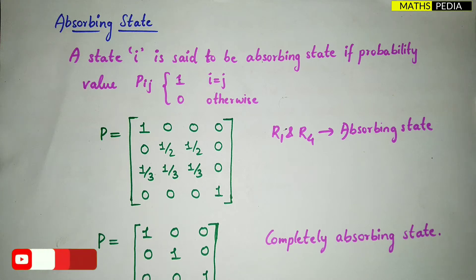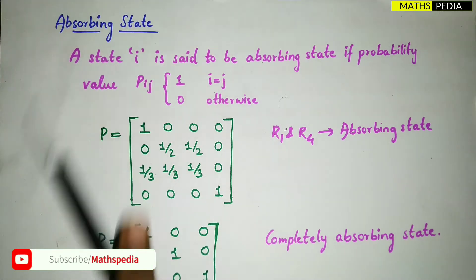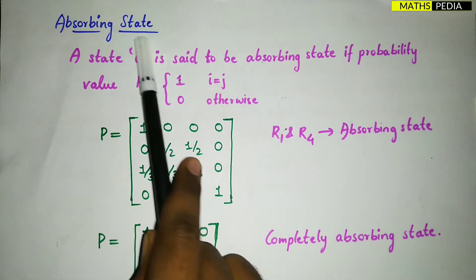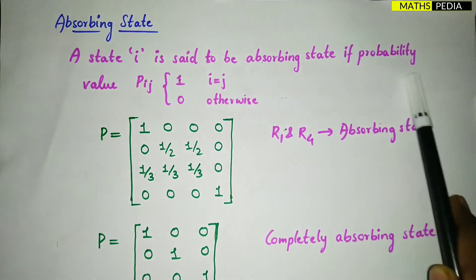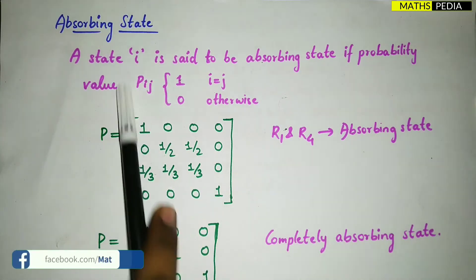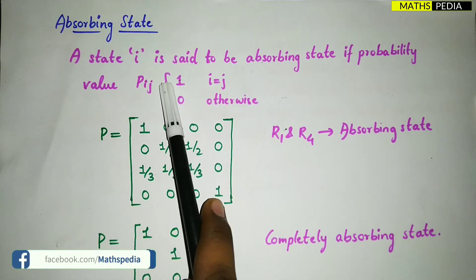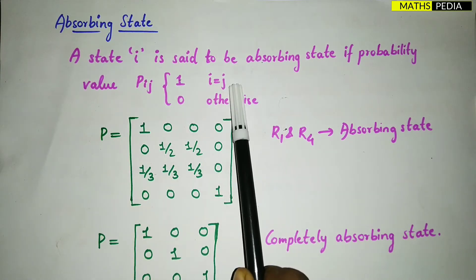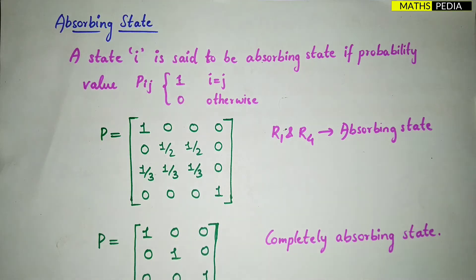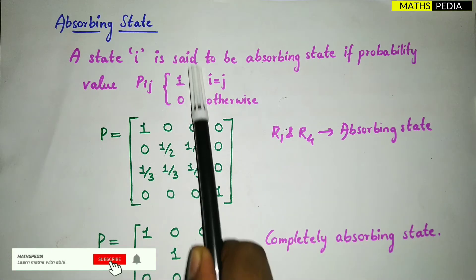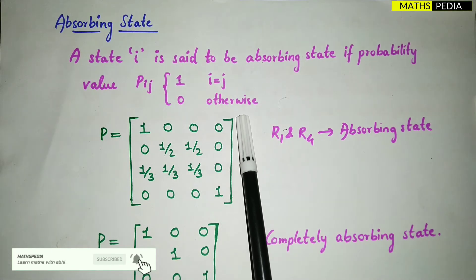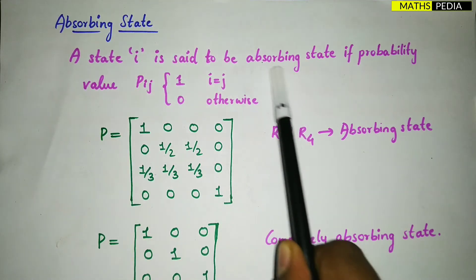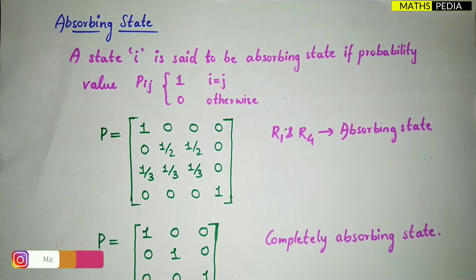Hello guys, in this video we will be discussing about the absorbing state. Basically, a state i is said to be an absorbing state if the probability value Pij is 1 when i equals j. That means when i and j are equal, the probability should be 1, and otherwise it should be 0. So let us see what is the meaning of this and what we call the absorbing state.